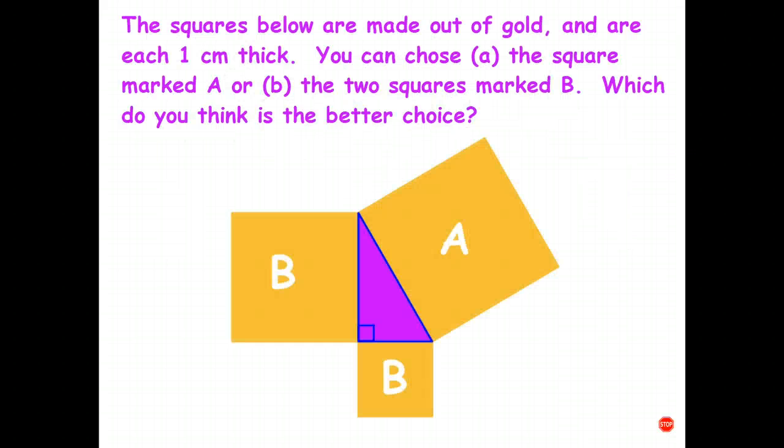And to finish off this particular video, have a look at this interesting question. You've got three squares made out of gold, each one centimeter thick. Now you have a choice. You can choose the single large square marked A or you can choose the two smaller squares marked B. So they're all equal thickness. Now, which of those two choices is better? Is it better to have the one large square or the two small squares?